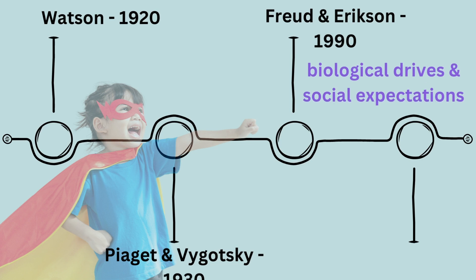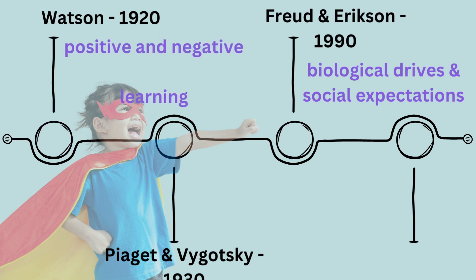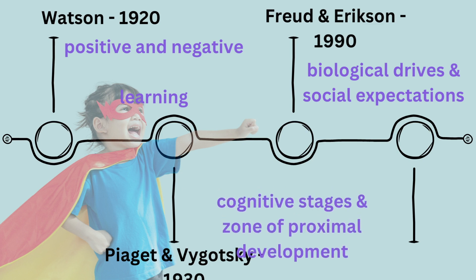John B. Watson in the 1920s focused on behaviourist approaches, finding that positive and negative learning through punishment and rewards drive development. Jean Piaget and Lev Vygotsky in the 1930s made significant contributions through experimental research, developing cognitive stages and the zone of proximal development respectively. These early studies laid the foundation for our understanding of child development and paved the way for modern research methods.